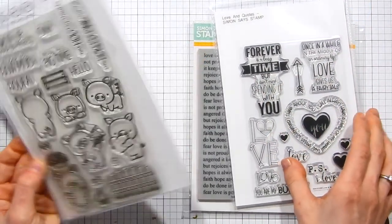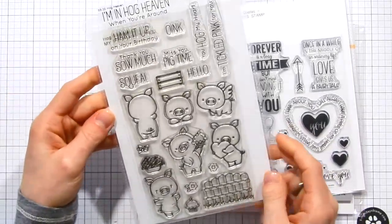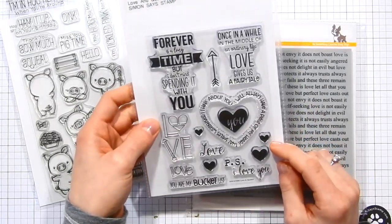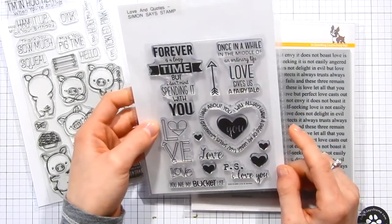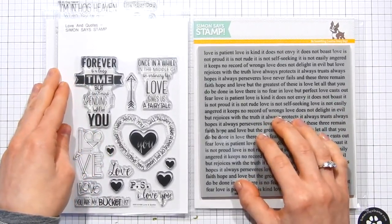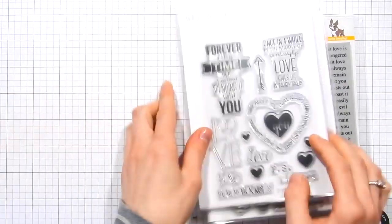We've got the Hog Heaven stamp set from My Favorite Things. These pigs are so adorable. We're going to be using the one with the heart. I've also got the Love and Quote stamp set and also this Love Is background stamp. Both of these are from Simon Says Stamp's newest release, Hey Love.